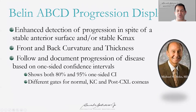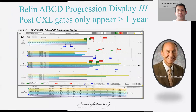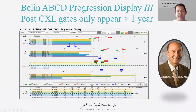More recently, introduced at this meeting, are the post-cross-linking repeatability studies done by Michael along with Professor Seitz from Hamburg and Hafezi from Zurich — to be released very soon. We have these very nice gates: the front surface is stable in this example, but considering cross-linking was done for this patient, you see some progression on the thickness and loss of corrected vision. After one year, the gates appear so that you can rely on the data for analyzing progression after cross-linking.